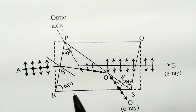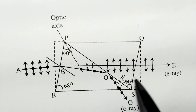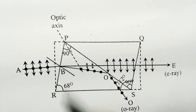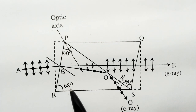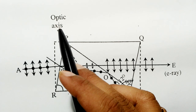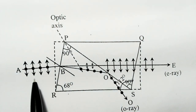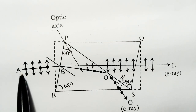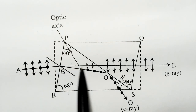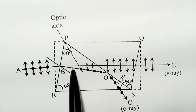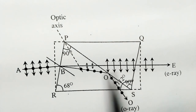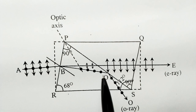Instead of the natural angles of 71 and 109 degrees, we grind the faces to make them 68 degrees. This direction is called the optic axis. When ordinary light enters the crystal, it splits and follows two paths — the extraordinary ray and the ordinary ray.